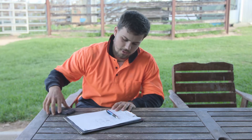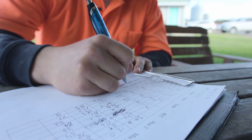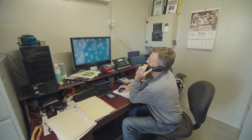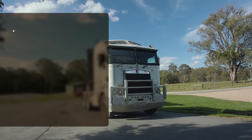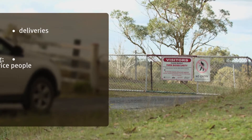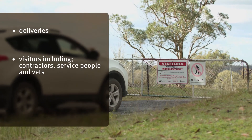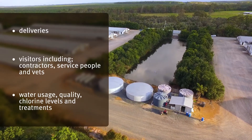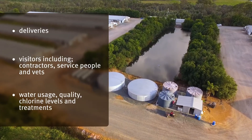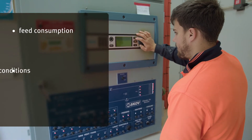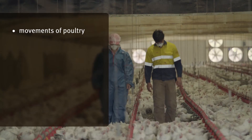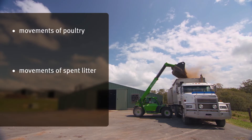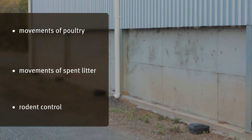Keeping routine records is important for production and performance purposes, and also for demonstrating that you've met your biosecurity duty and obligations. Always keep records of deliveries; visitors including contractors, service people and vets; water usage, quality, chlorine levels and treatments; feed consumption; shed conditions; mortalities including culls; movements of poultry; movements of spent litter; and rodent control.